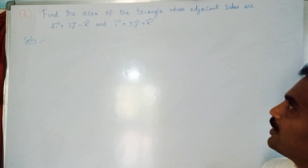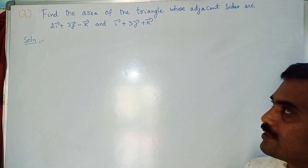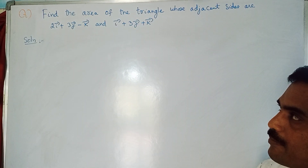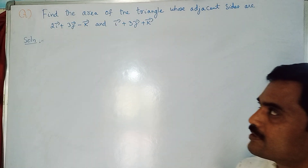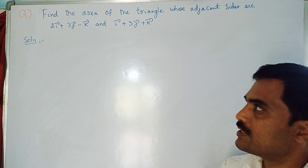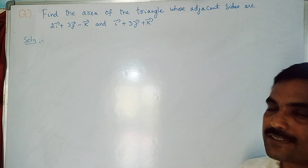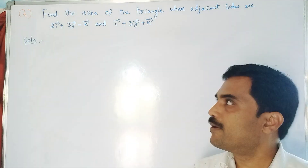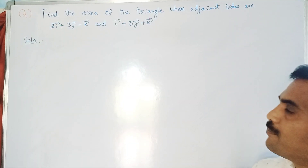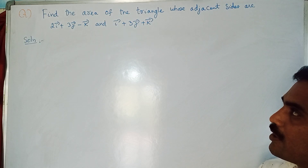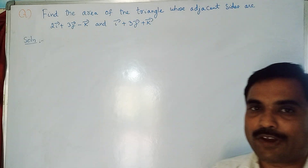In this problem they have given two vectors. The first vector, a, is 2i + 3j - k, and the second vector, b, is i + 3j + k.